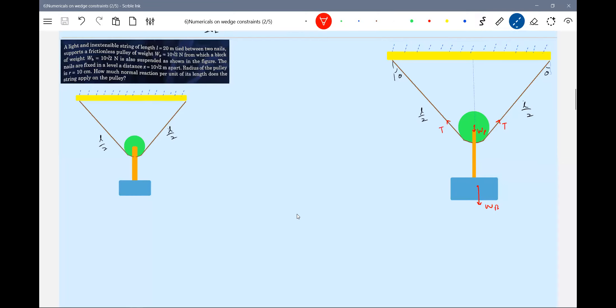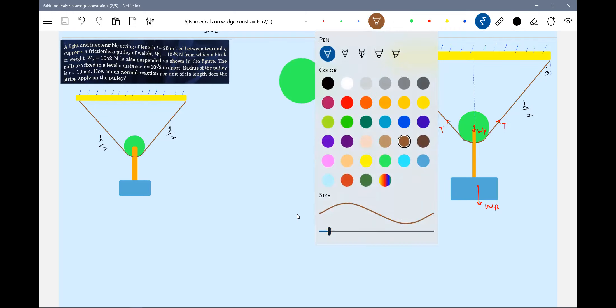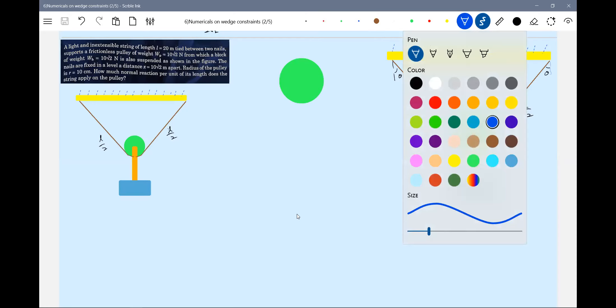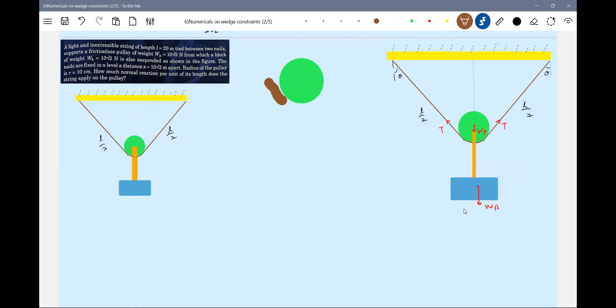This is something we have to justify with a suitable diagram. Let me draw the rope. A possibility of the rope exerting force on the pulley where it is in contact.